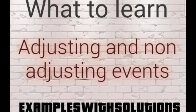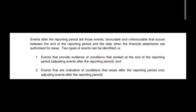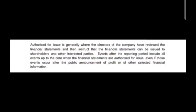About IAS 10: what are adjusting events? Events after the reporting period are those events, favorable or unfavorable, that occur between the end of the reporting period and the date when the financial statements are authorized for issue. Two types of events can be identified: events that provide evidence of conditions that existed at the end of the reporting period, which are adjusting events, and events that are indicative of conditions that arose after the reporting period, which are non-adjusting events.